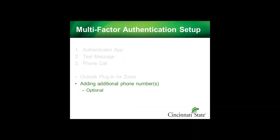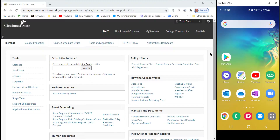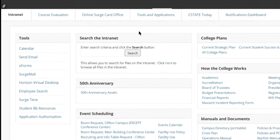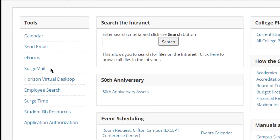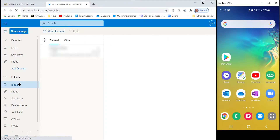After you've set up one of the three multi-factor authentication methods, you can set additional phone numbers as backup methods in case the primary method fails. This can be an office phone, home phone, vacation phone, etc. To set up an additional phone number, log into My C-State and click Surge Mail from the Tools menu.